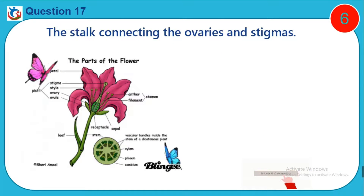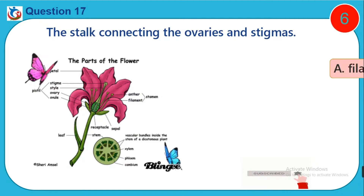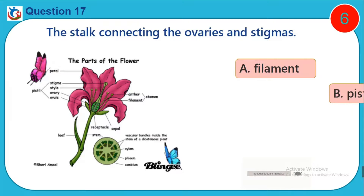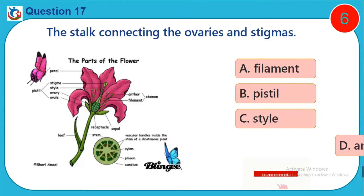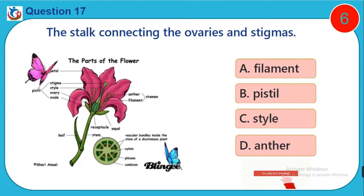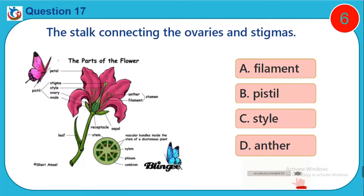Question 17. The stalk connecting the ovary and stigma. A. Filament. B. Pistil. C. Style. D. Anther.